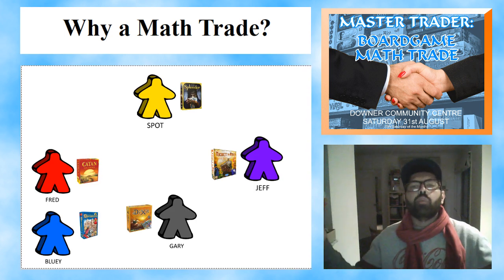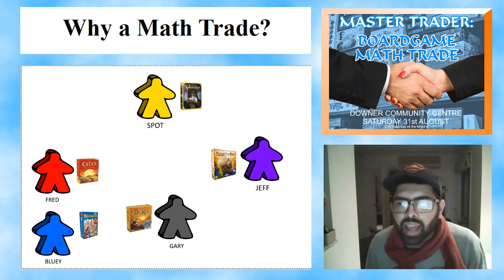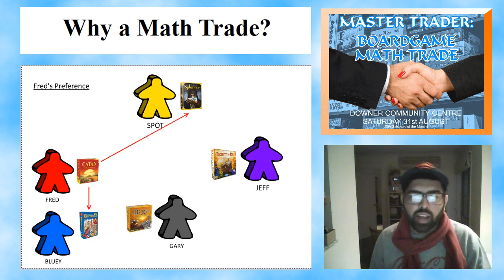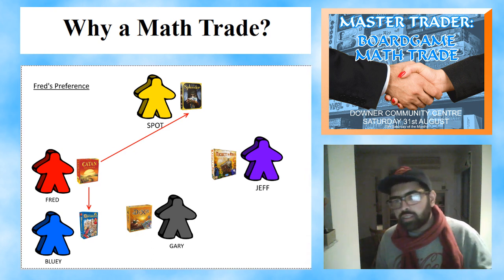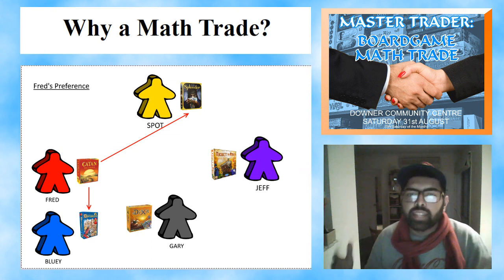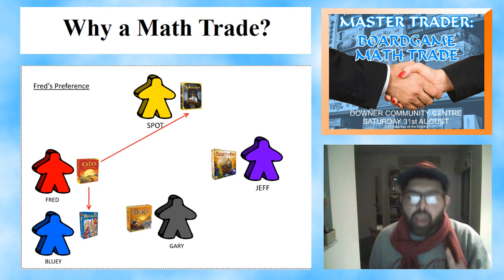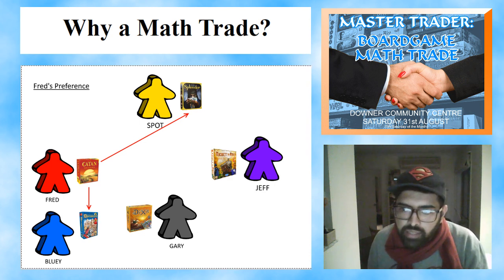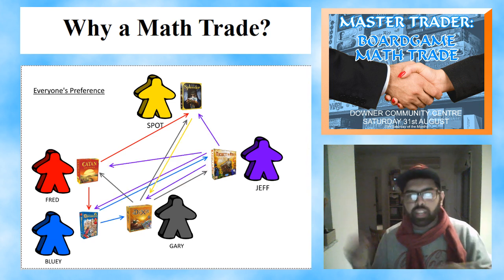We've got Spot and Jeff in here now as well. When Fred looks at the games he wants to trade his Catan for, he's happy to also have Splendor — Cocks On or Splendor, he doesn't mind which one he gets as long as he gets one of those games. But when you have a situation like this, things quickly get out of hand.